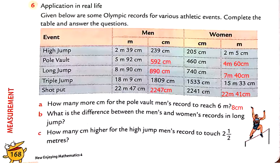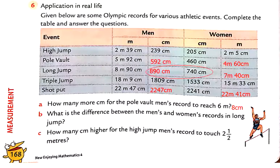Question number B: What is the difference between the men's and women's records in long jump? The men's long jump record is 890 centimeters and the women's long jump record is 740 centimeters. So we calculate 890 minus 740.